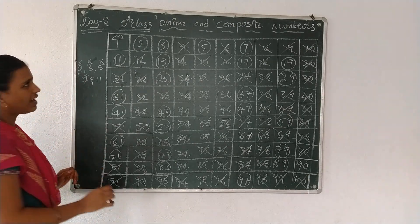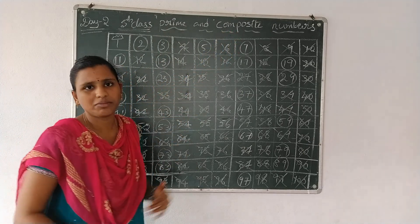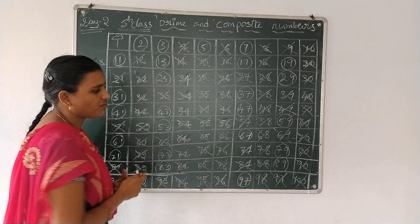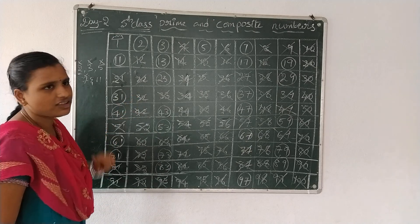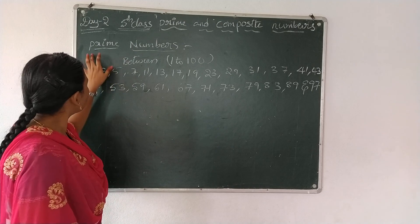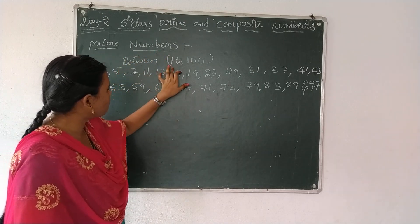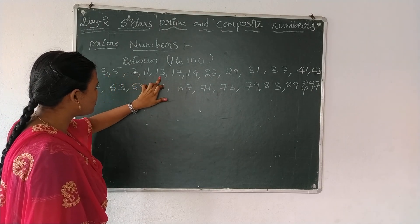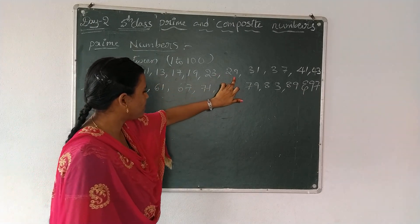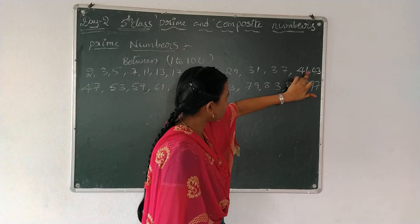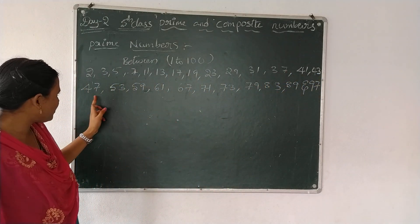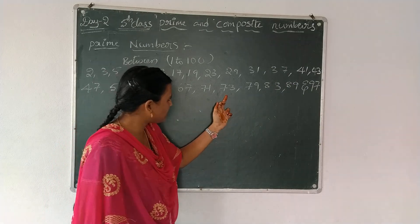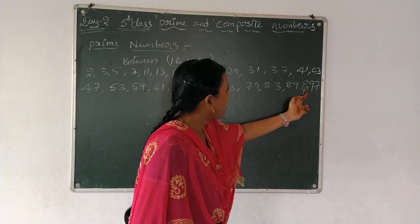Now write down prime numbers and composite numbers separately. Prime numbers between 1 to 100 are: 2, 3, 5, 7, 11, 13, 17, 19, 23, 29, 31, 37, 41, 43, 47, 53, 59, 61, 67, 71, 73, 79, 83, 89, and 97.